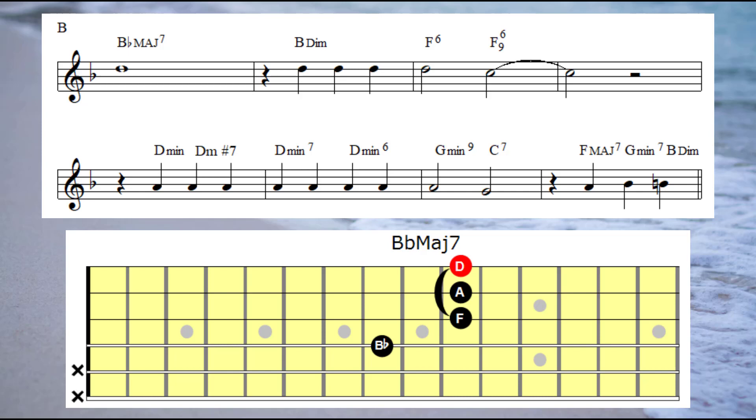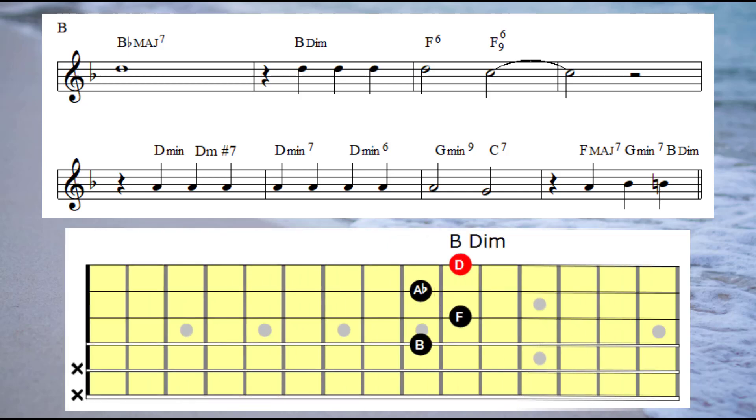So in the first bar underneath the D note, I'm going to play a B flat major seventh chord. On to the second bar, I'm going to play an inversion of the B diminished chord under the D note.